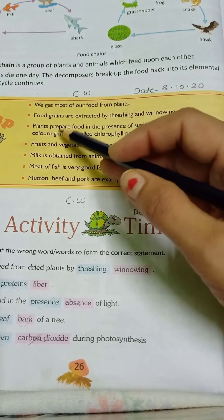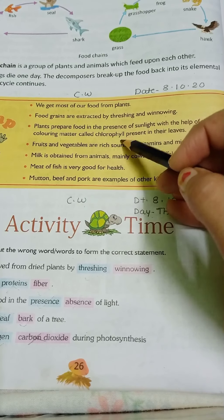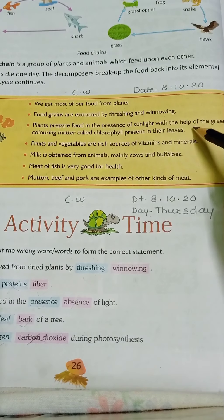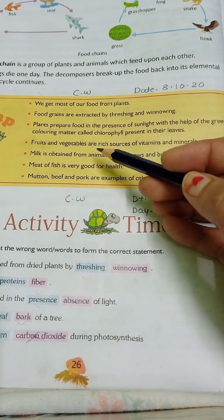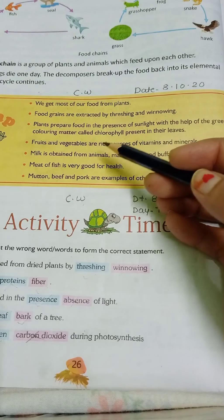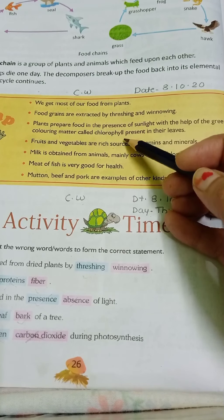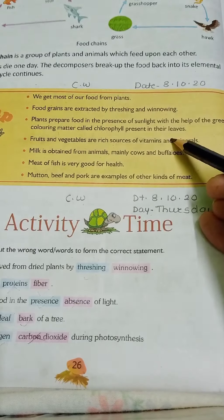Next, plants prepare food in the presence of sunlight with the help of the green coloring matter called chlorophyll, which is present in their leaves.